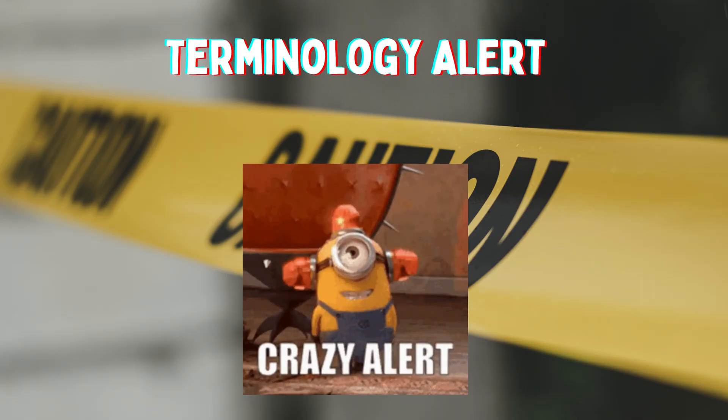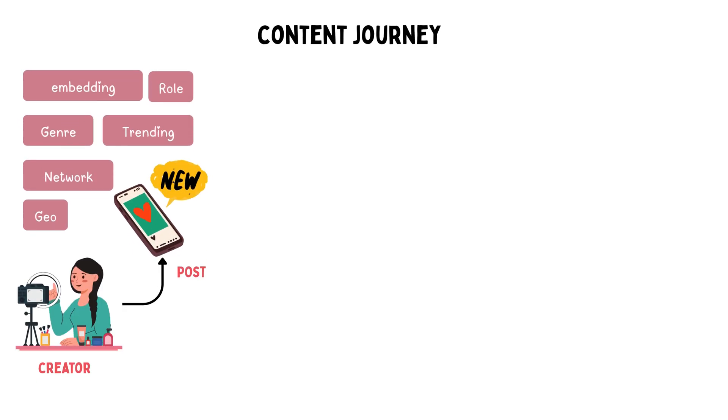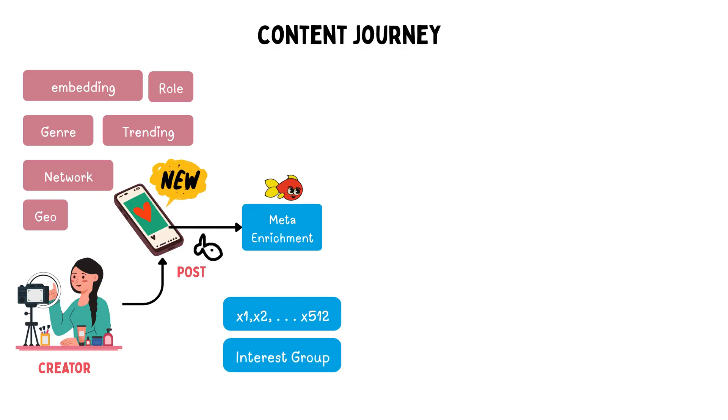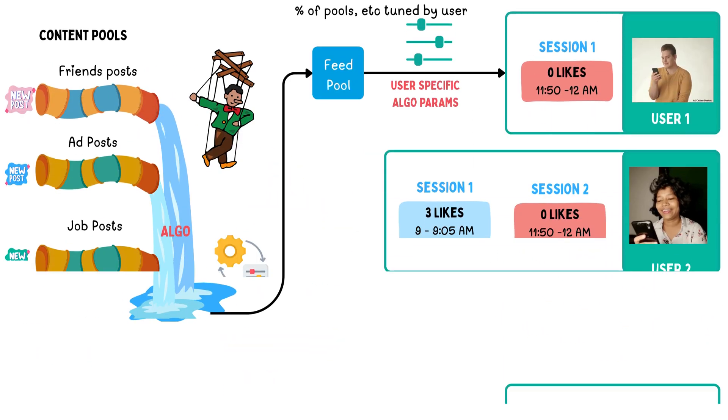Now before we start, there are a few terms you need to be aware of. Every time you post an article or upload your video, it triggers a series of background tasks. The content swims through stages such as meta enrichment, where your data is converted to a vector, the genre, the quality of English or any language, and these features are identified, given some scores, and fast-forwarded to a pool of content.